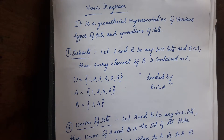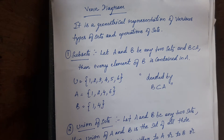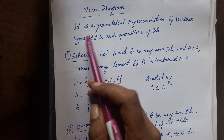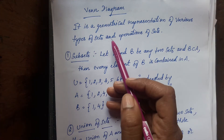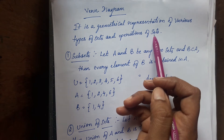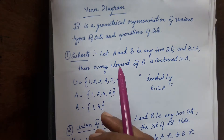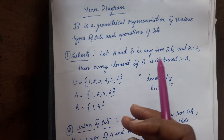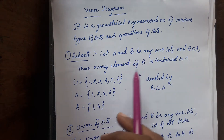Hello friends, today we will continue with sets. We will see about Venn diagrams — how to draw them. A Venn diagram is a geometrical representation of various types of sets and operations of sets. So we are going to draw in diagram form everything you learned: union, intersection, and all that.